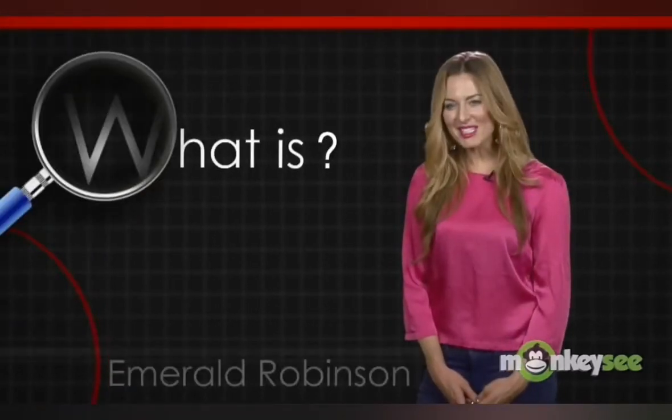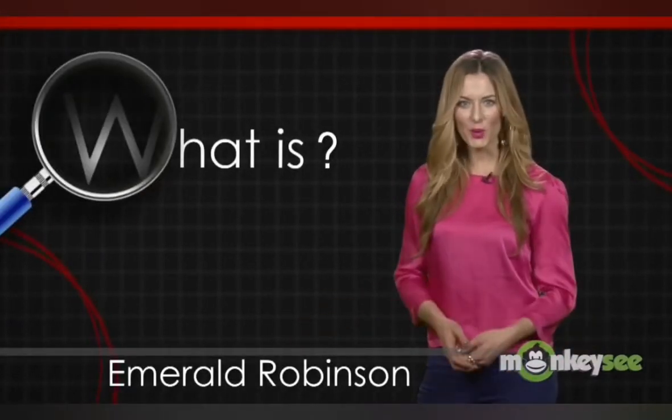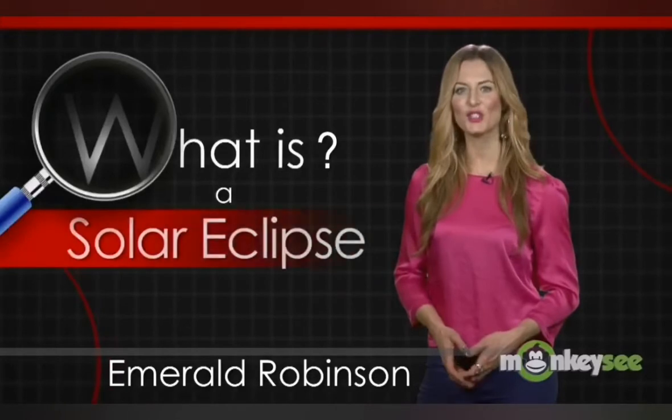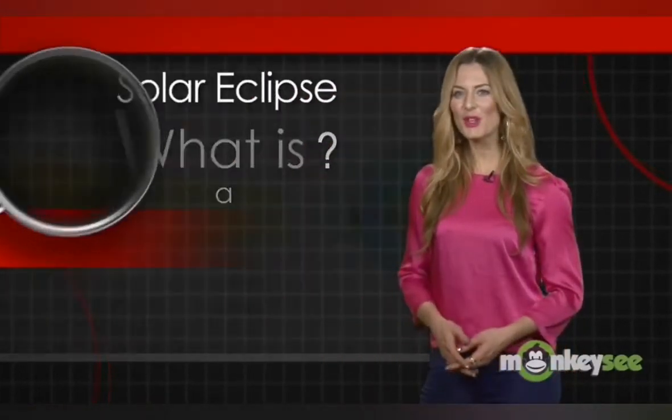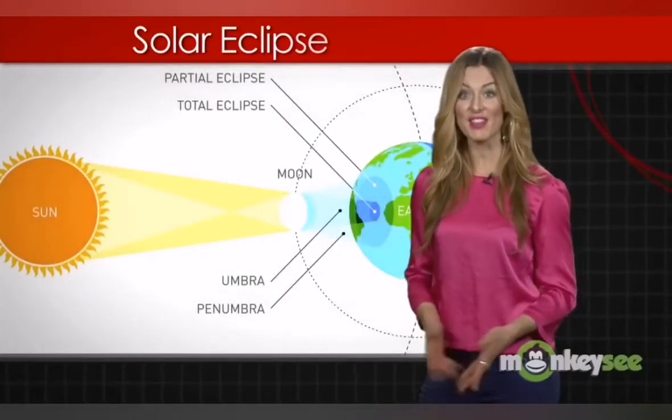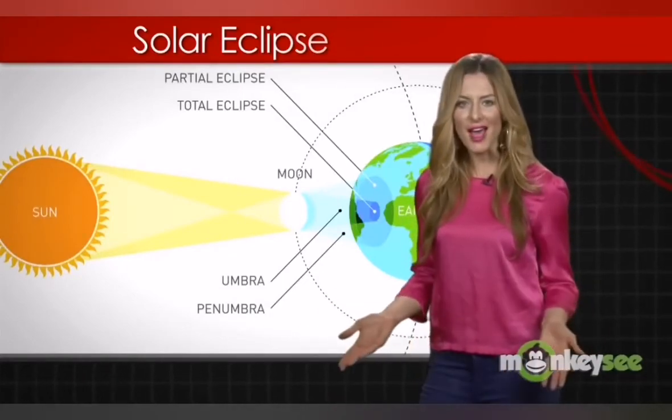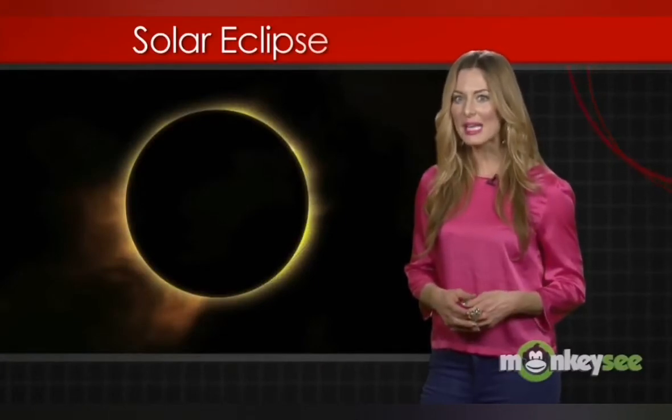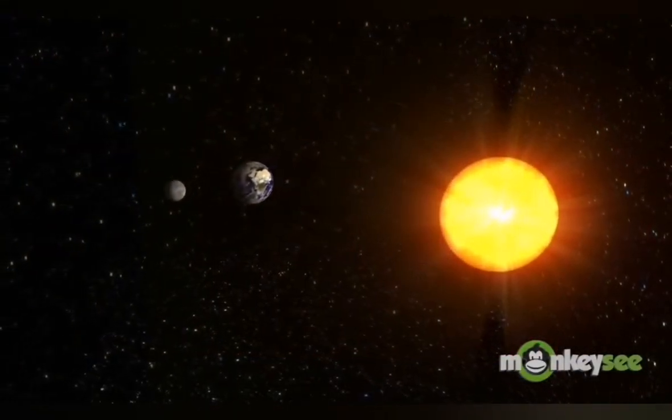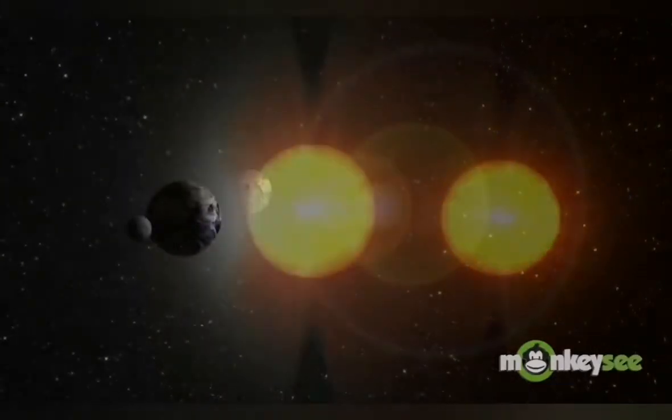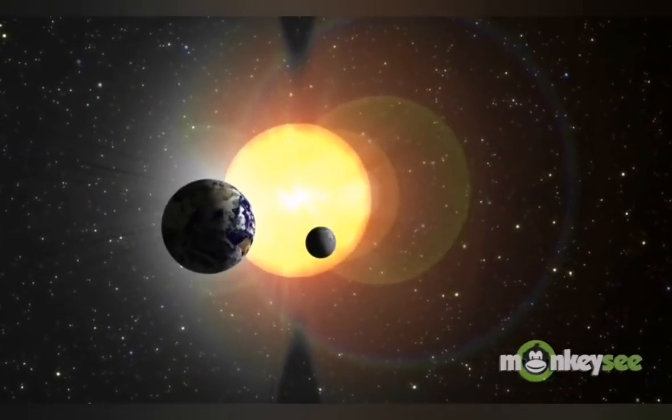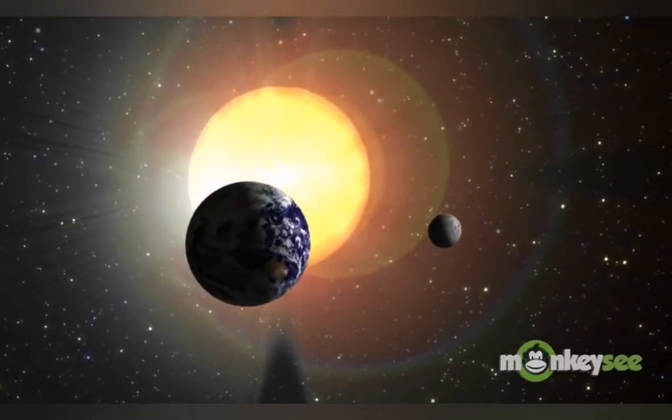Hi, I'm Emerald Robinson. In this What Is video, we're going to take a closer look at solar eclipses. A solar eclipse occurs when the new moon passes between the Earth and the Sun. For a few brief moments, the moon's shadow blocks sunlight from reaching the Earth. A total solar eclipse completely blocks our view of the Sun, while a partial solar eclipse only covers part of the Sun.